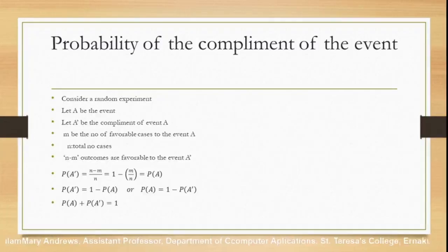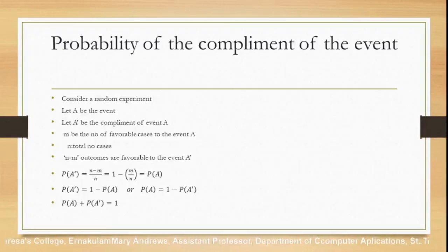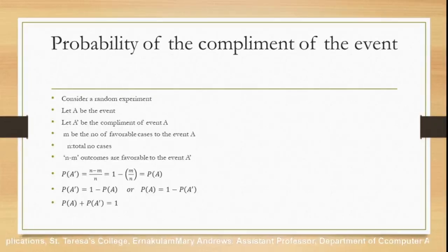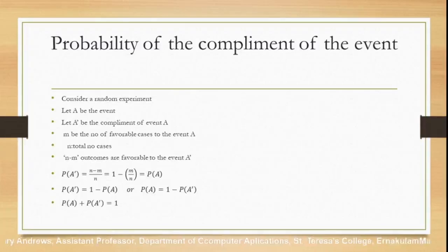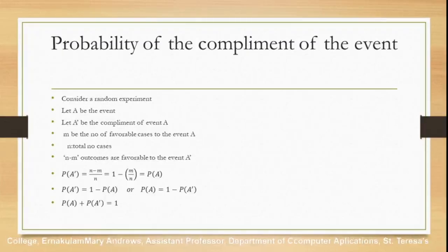P(A') = (n - m)/n = 1 - m/n = 1 - P(A). This implies P(A') = 1 - P(A), or equivalently P(A) = 1 - P(A'), or P(A) + P(A') = 1. I hope you understood the classical definition of probability, its limitations, the limits of probability, and the relationship between the probability of an event and the probability of its complement. Stay tuned for the next video. Thank you.